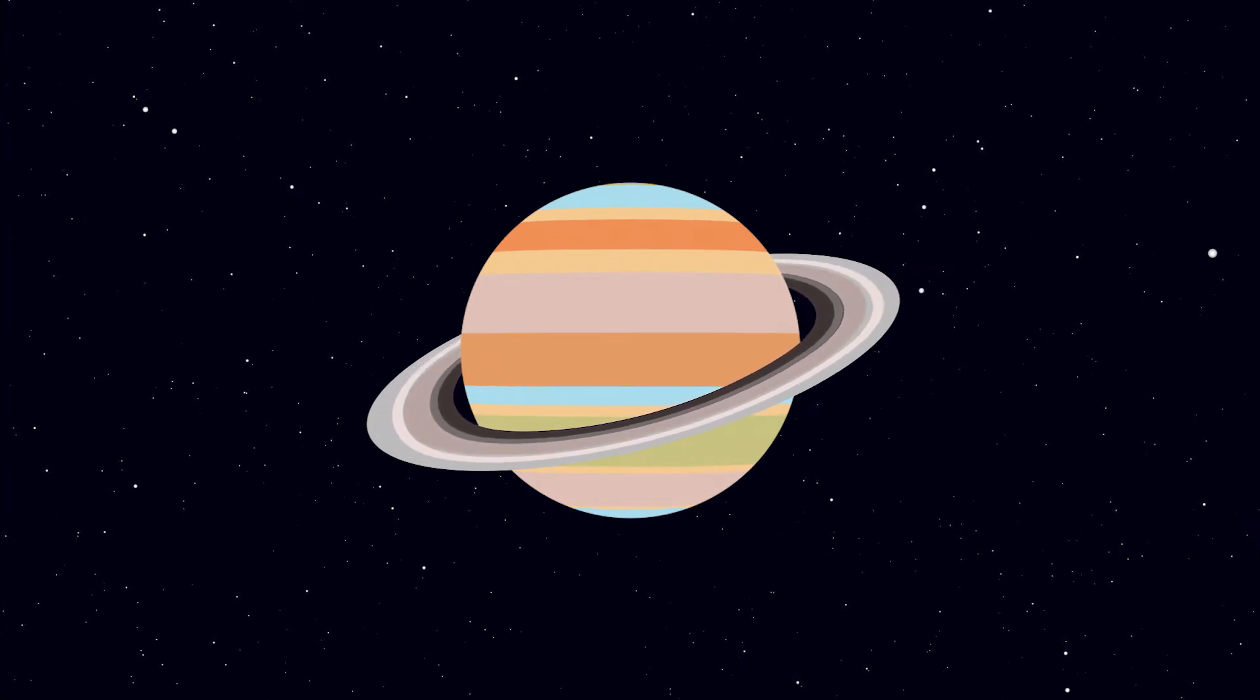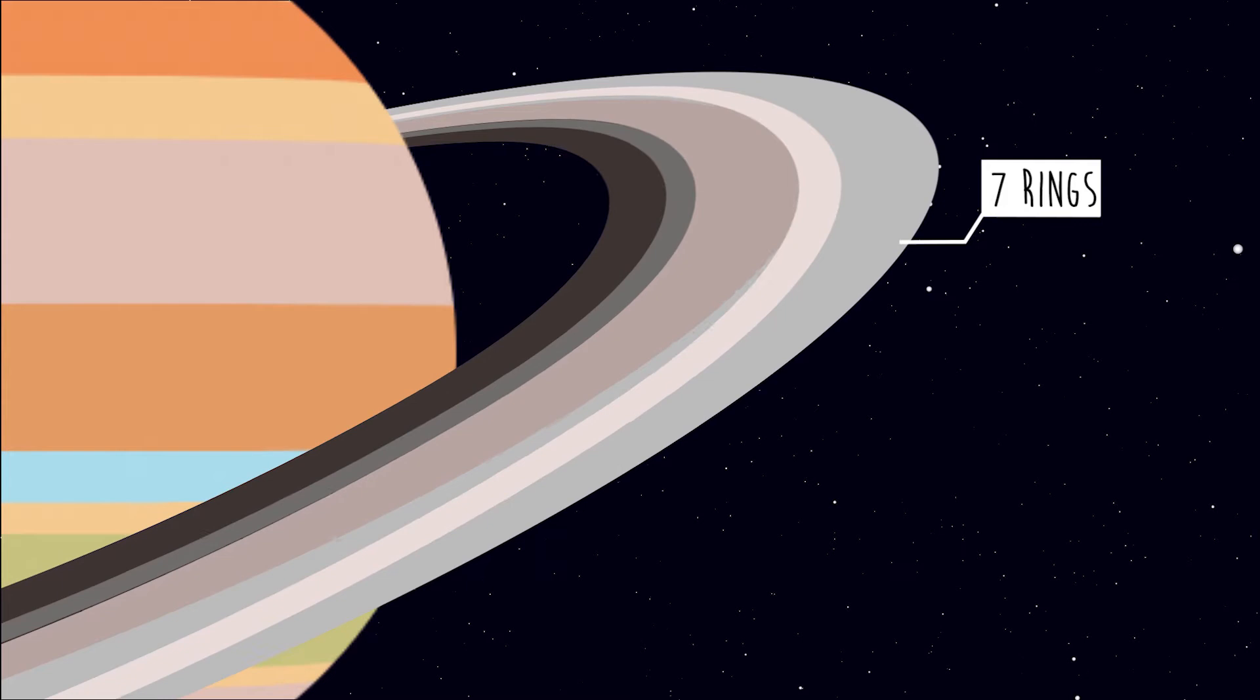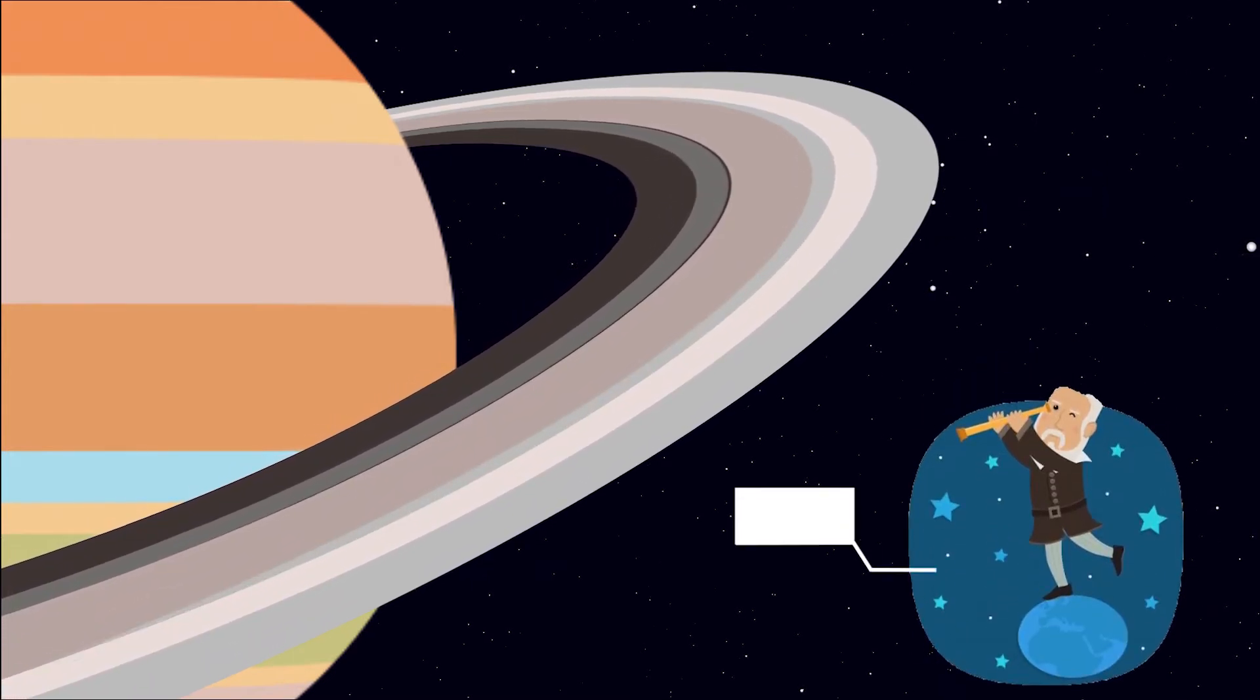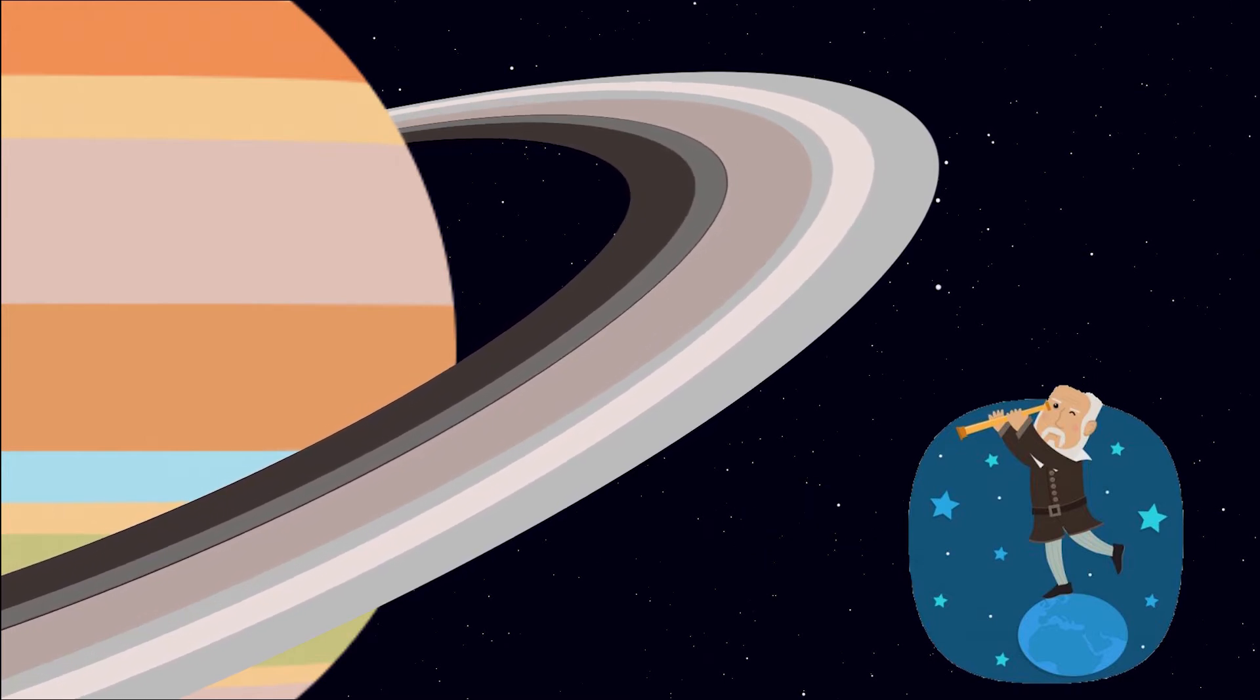Saturn is the sixth planet from the Sun and the second largest planet of the solar system. It has the most spectacular ring system, discovered by Galileo Galilei in 1610, with seven rings and several gaps and divisions between them.